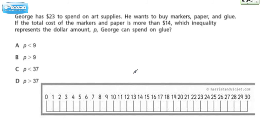So what are we buying here? We're buying markers, paper, and glue. That amount has to be less than or equal to $23, because that's how much money we have. Let's visualize the $23.